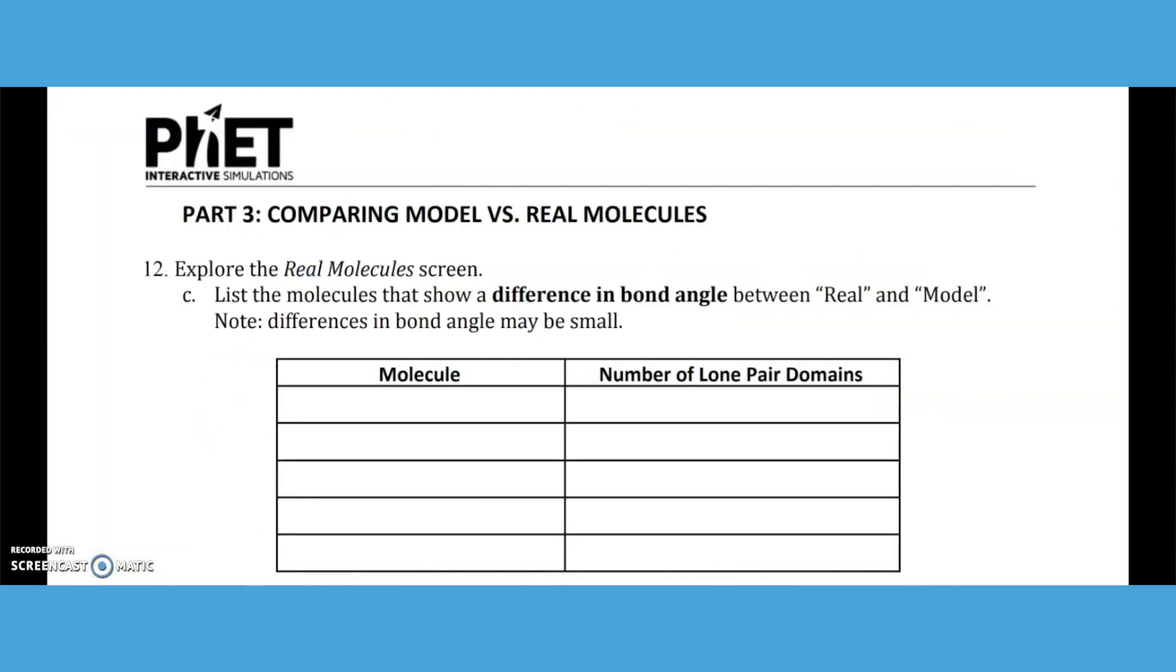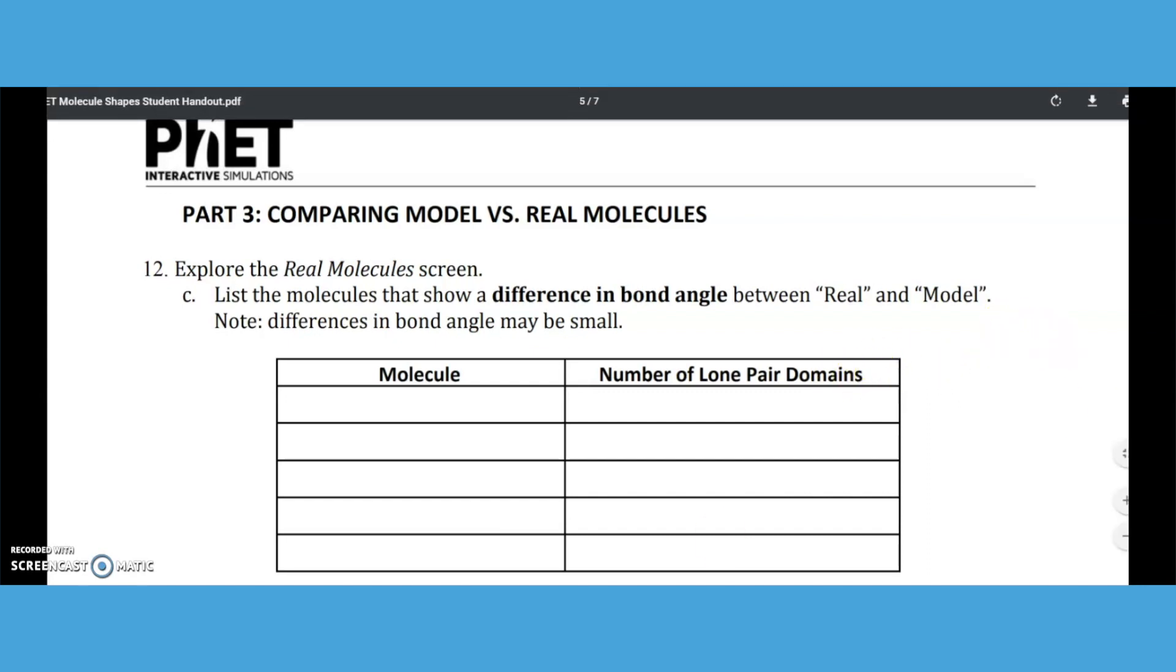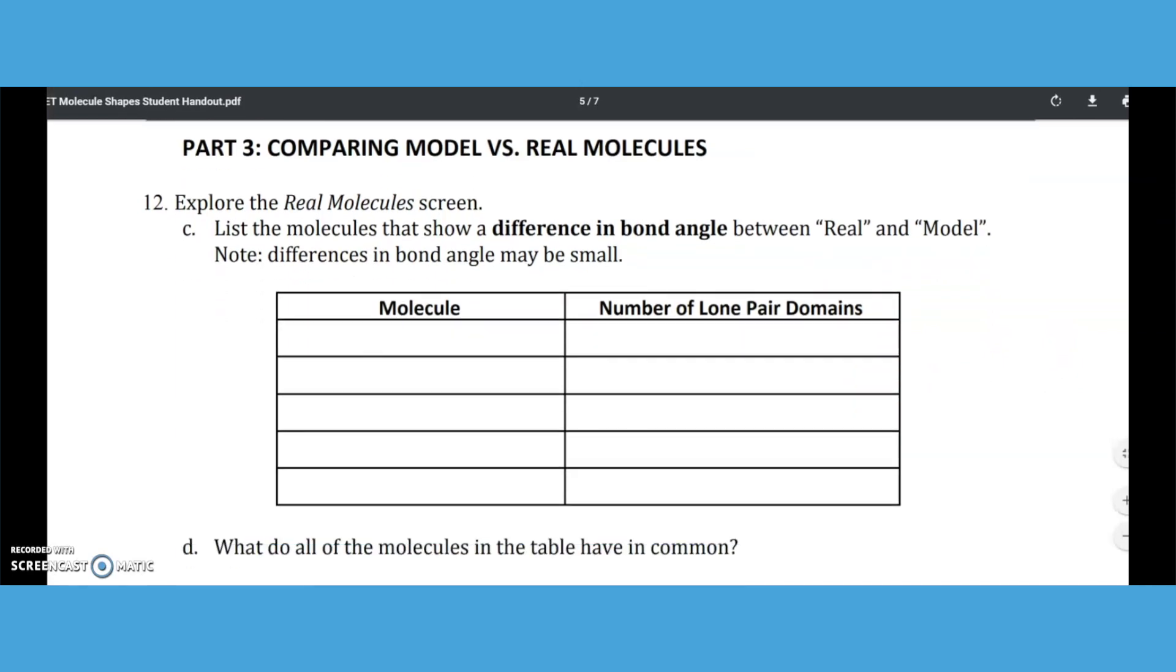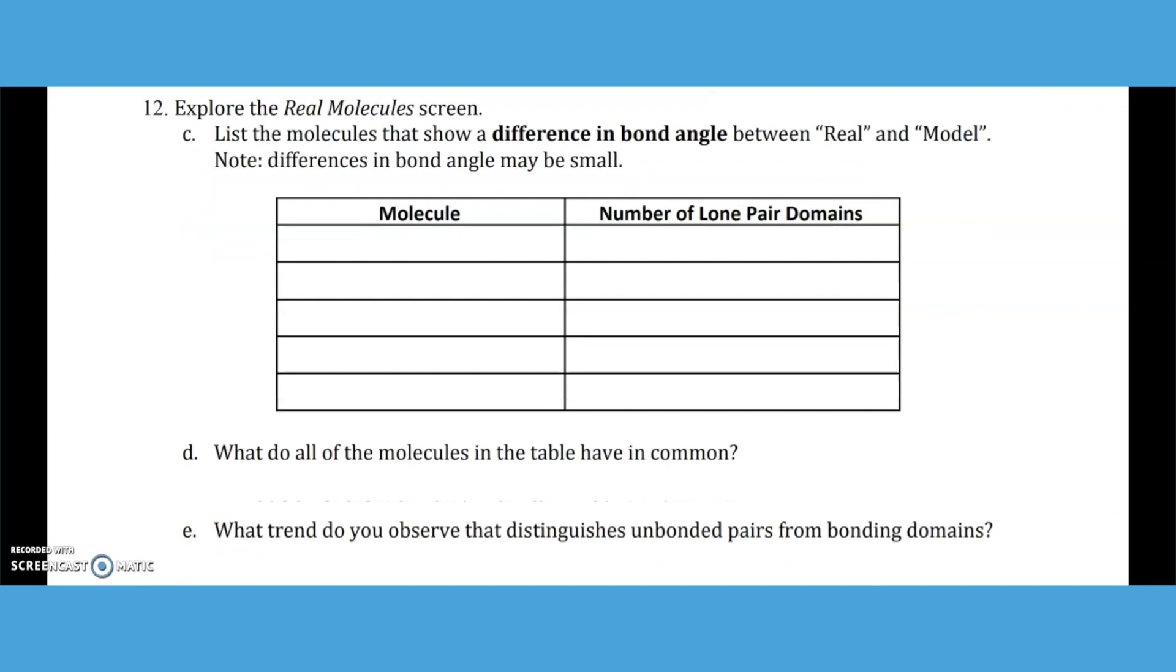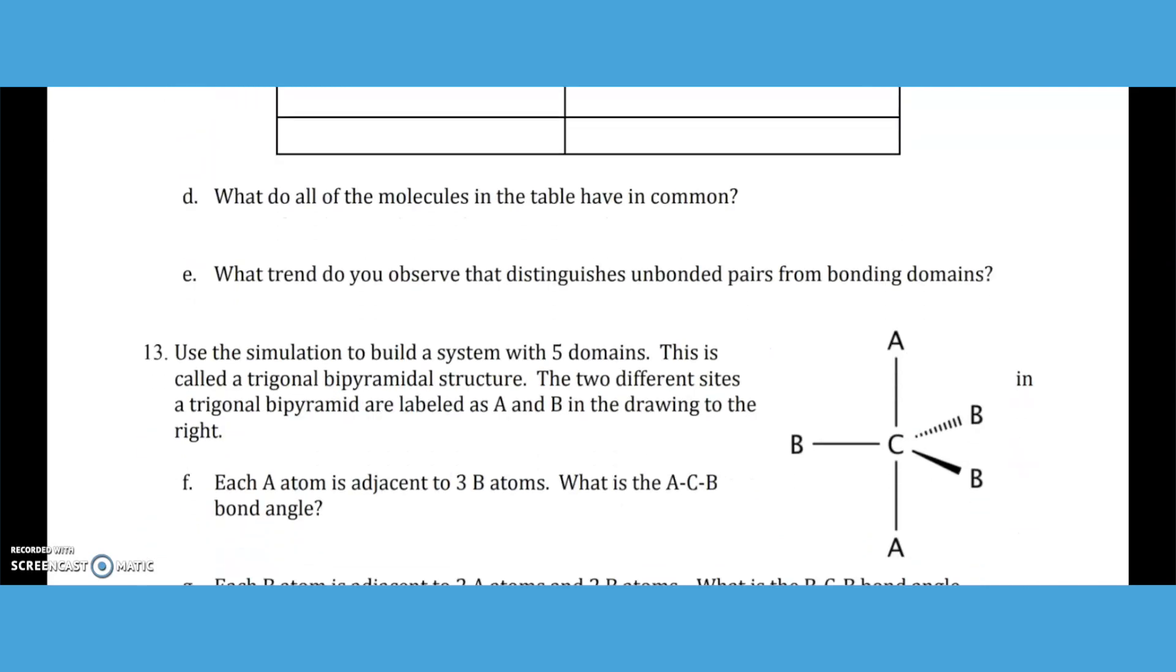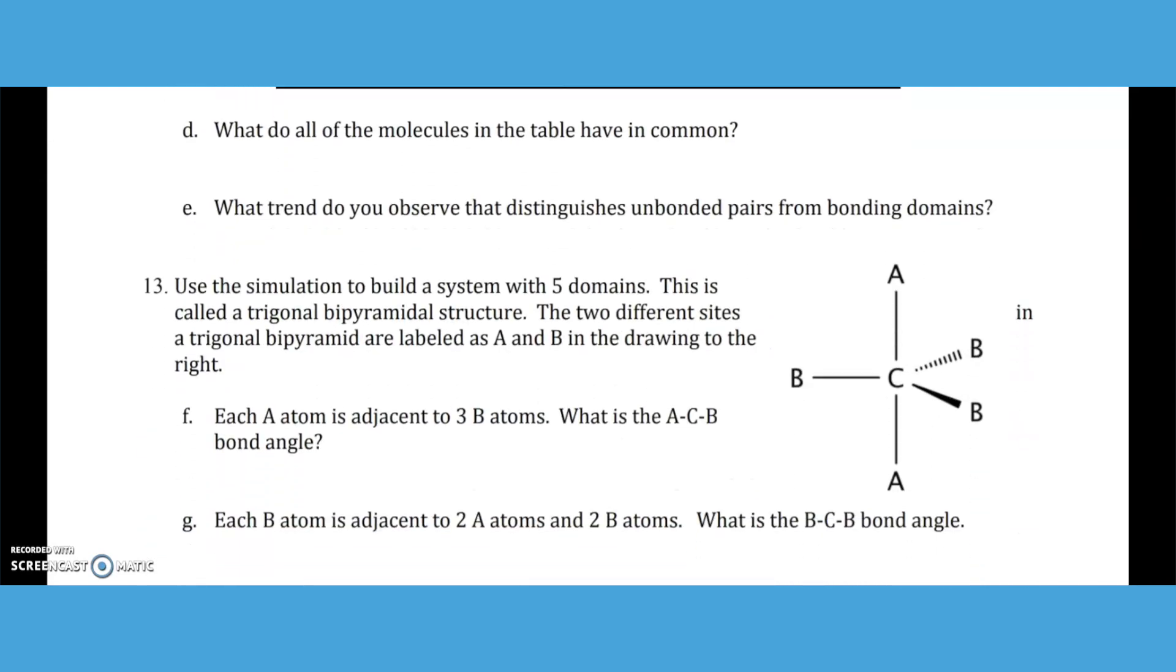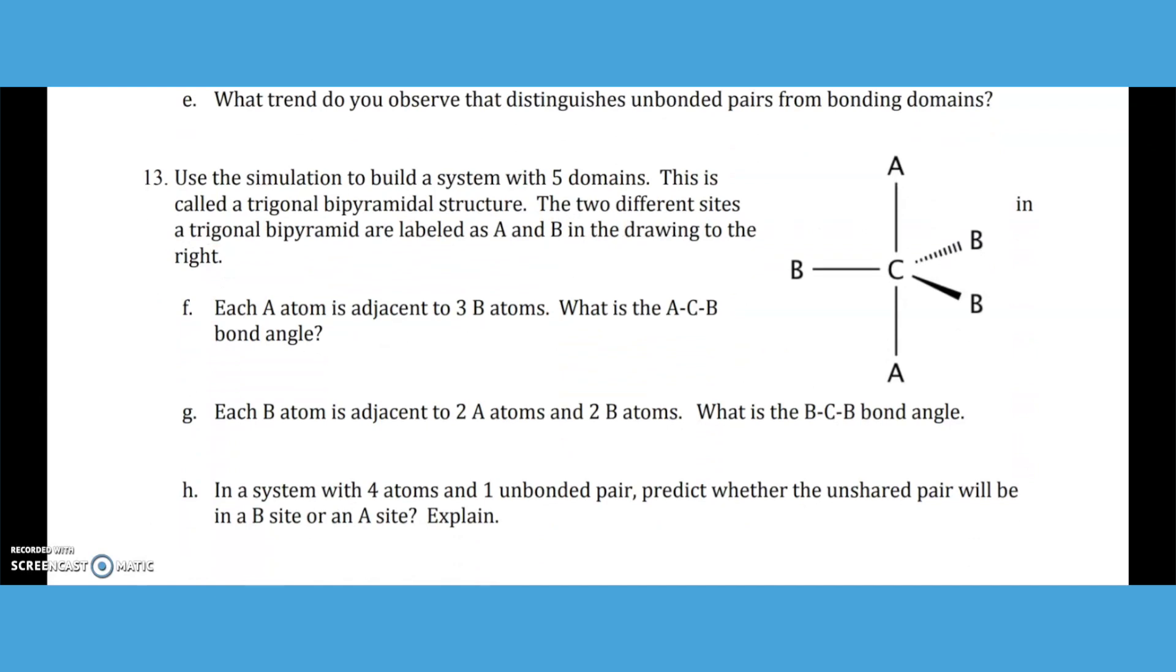As I've walked you through the simulation, let's go back to part three. The data table here shows the molecule in terms of the difference in the bond angle, real versus model, and then what do these molecules have in common? What trend are they observing?